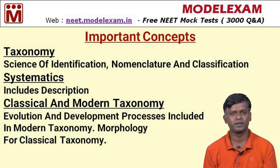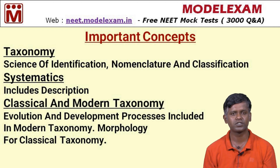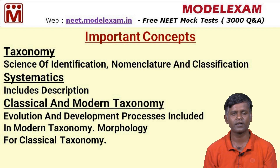Taxonomy is the science of identification, nomenclature, and classification of organisms. Taxonomy goes hand in hand with systematics. Systematics is a field of taxonomy that includes the description of species or genera — when a description pattern is included in taxonomy, it is called systematics.